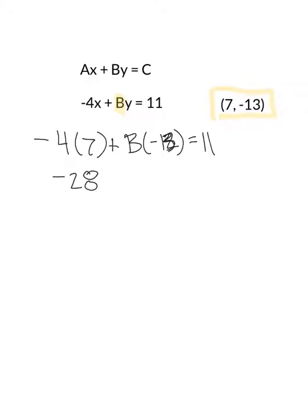Then the second thing I'm going to do is simplify this equation. So I'm going to multiply negative 4 times 7 and get negative 28. I'm going to multiply negative 13 times B, so it's negative 13B equals 11.